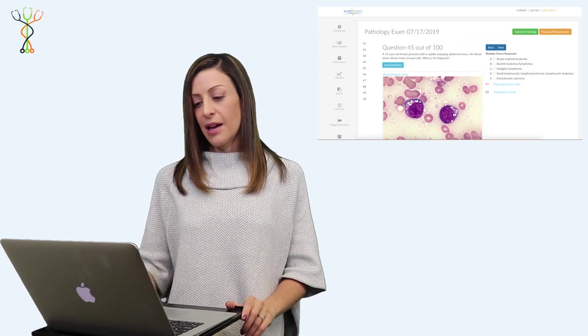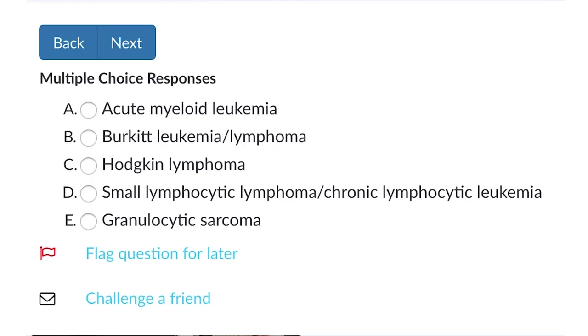The options are acute myeloid leukemia, Burkitt lymphoma or Burkitt leukemia, Hodgkin lymphoma, small lymphocytic lymphoma or CLL, and granulocytic sarcoma.